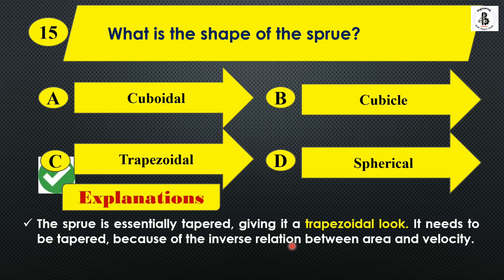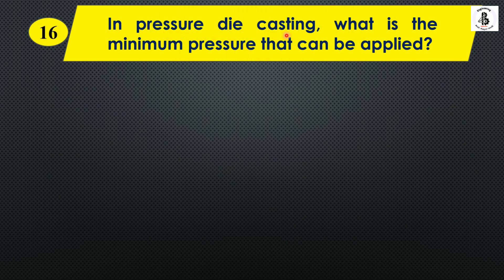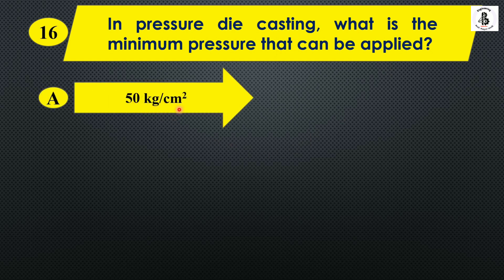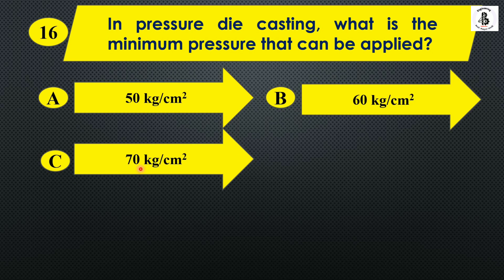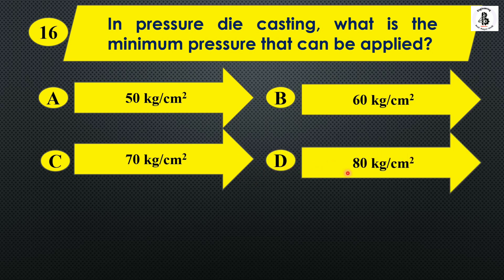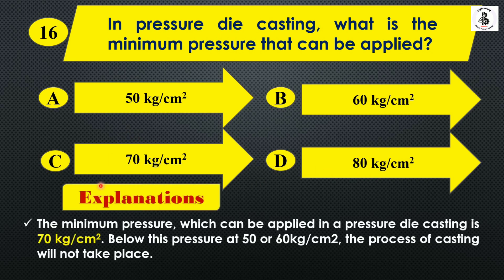Question sixteen: In pressure die casting, what is the minimum pressure that can be applied? Option A: 50 kg/cm², Option B: 60 kg/cm², Option C: 70 kg/cm², Option D: 80 kg/cm². In pressure die casting, the minimum pressure required is around 70 kg/cm². Below this pressure — at 50 or 60 kg/cm² — the casting process will not take place. The answer is Option C: 70 kg/cm².